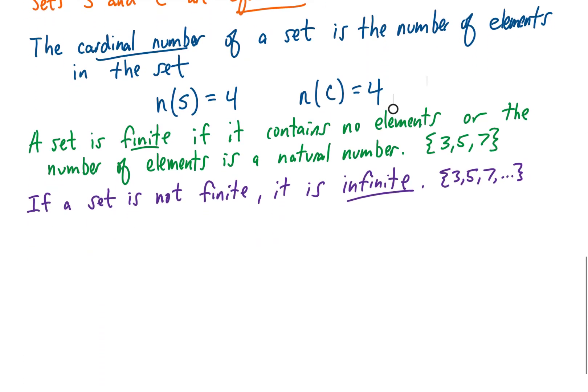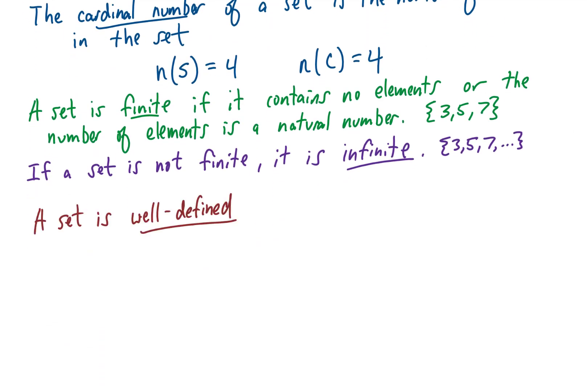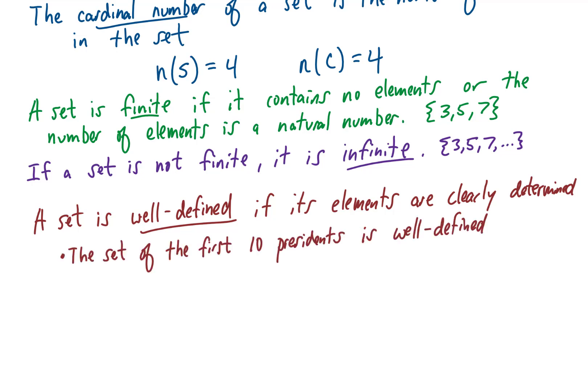A couple more vocabulary words. A set is well-defined if its elements can be clearly determined. For example, the set of the first 10 presidents of the United States is clearly determined, so it's a well-defined set. However, the set of the best 10 presidents in the United States is not well-defined because the word 'best' depends on individual opinions, so everybody's set of the 10 best presidents could be different.